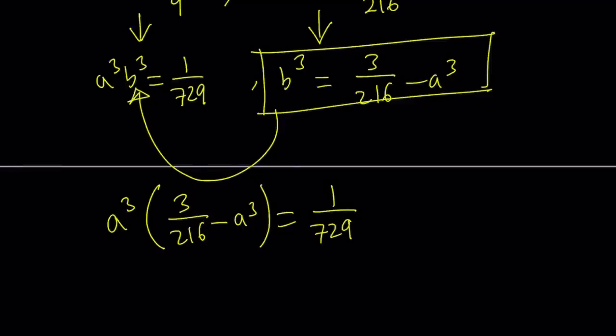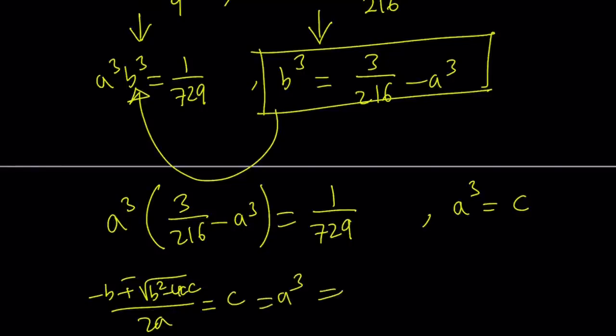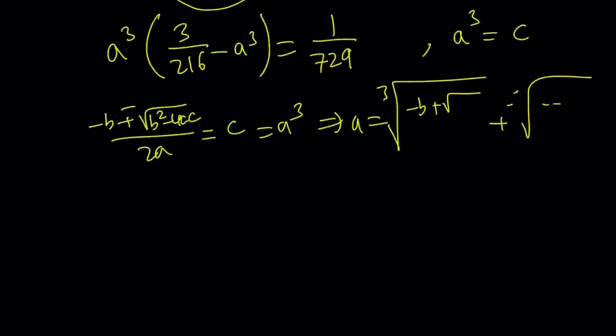Now we're going to use substitution. Set a cubed equal to c, and then you're going to get a quadratic equation from here, so on and so forth. And after solving the quadratic, remember, with the quadratic formula, we get negative b plus minus the square root of b squared minus 4ac over 2a. And these are going to be the c value, and that's going to equal a cubed. a is just the cube root of one of the solutions, and the other one is the cube root of the other solution. Anyway, this is very painful. Let's talk about the second method, which is much better.